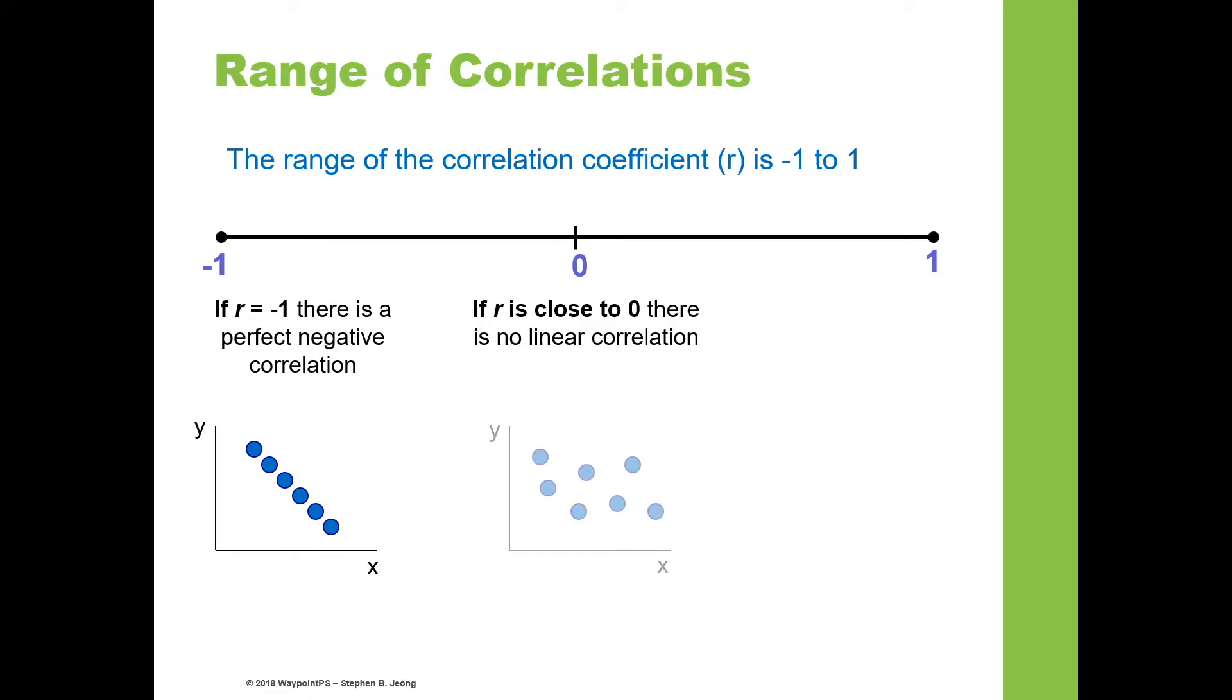If correlation is close to zero, there is no linear correlation or relationship, meaning that as x increases, you don't know whether y increases or decreases. It's relatively random. On the right-hand side, correlation of 1 is a perfect positive correlation, meaning that for every unit of increase in x, y will increase by a unit. It's a perfect lockstep, positive relationship.